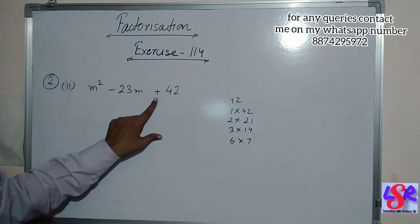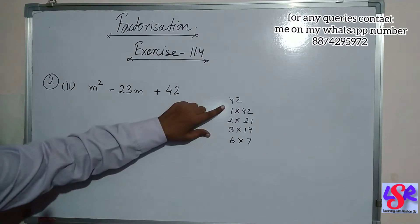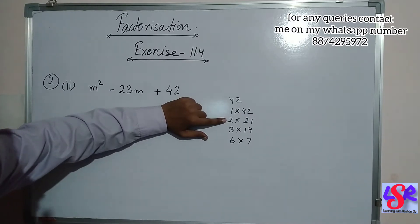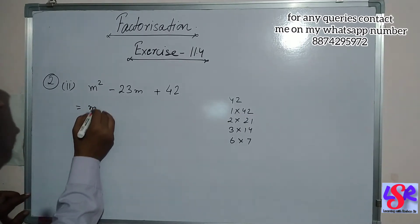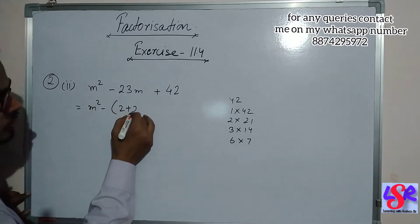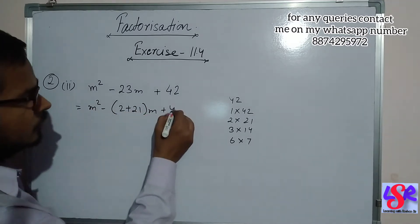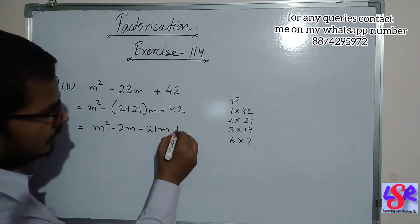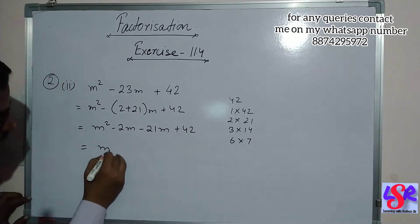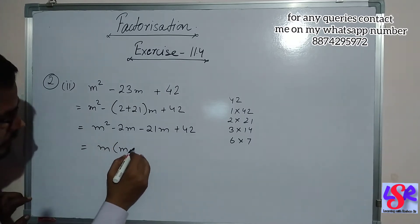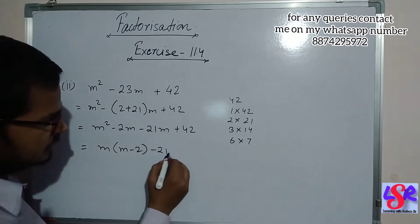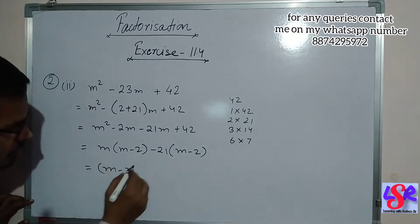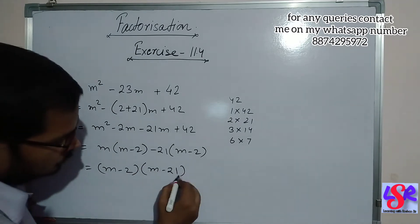Now we are having a positive sign, so the product of the two factors is plus 42. We are going to add any two factors to get 23. We find that 2 and 21 add to give 23. So we split this as m square minus 2m minus 21m plus 42. Taking m common from the first two gives m minus 2, and taking minus 21 common from the last two also gives m minus 2. Taking m minus 2 as common, we are left with m minus 21.